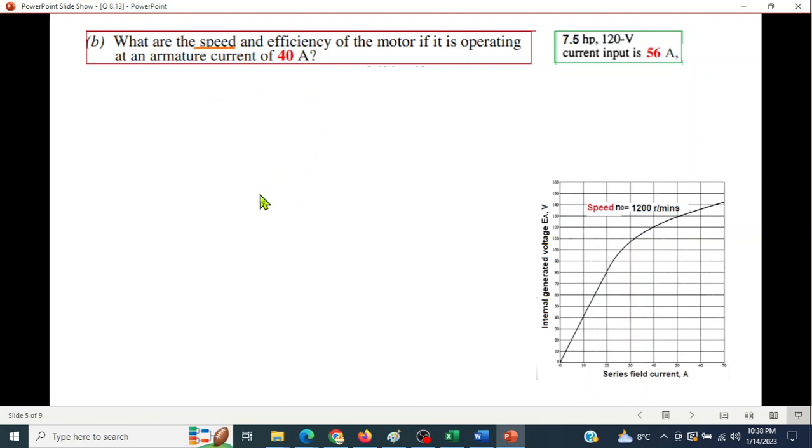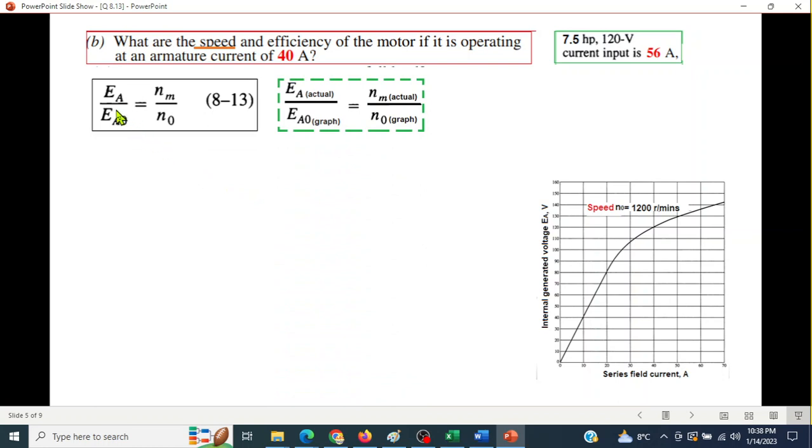First we'll go for speed, and for that we'll be using this formula from equation 8-13: EA divided by EA0 equals n_m divided by n_0. EA is the actual back emf or induced emf, and EA0 is the induced emf that will be calculated from this graph. Similarly, n_m is the actual mechanical speed, and n_0 is the speed from this graph, which is 1200 revolutions per minute given here in this graph.